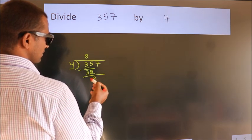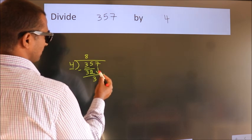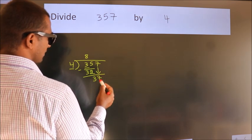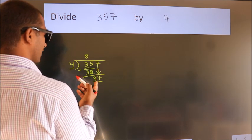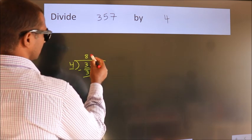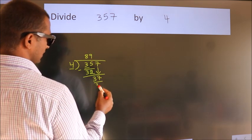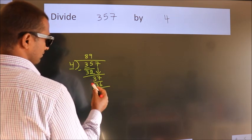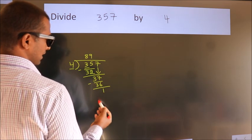After this, bring down the beside number, so 7 down. So 37. A number close to 37 in the fourth table is 4 times 9 equals 36. Now we subtract. We get 1.